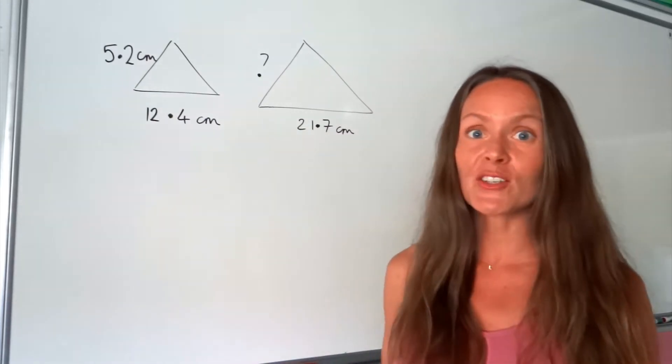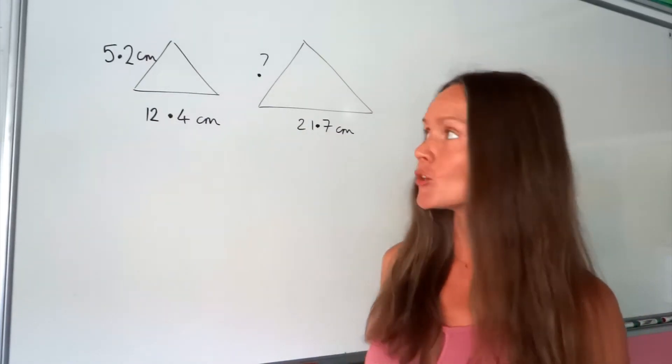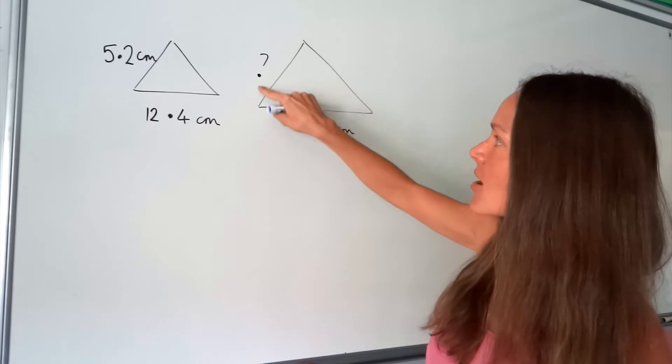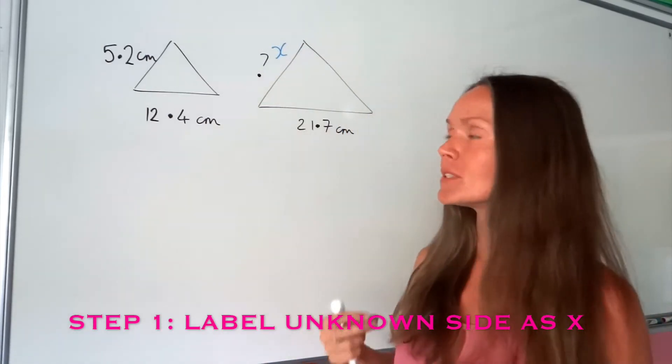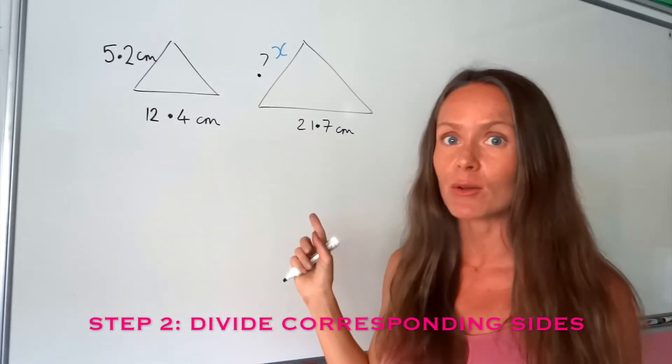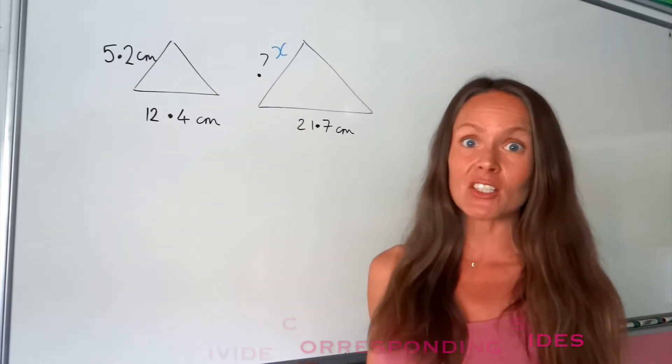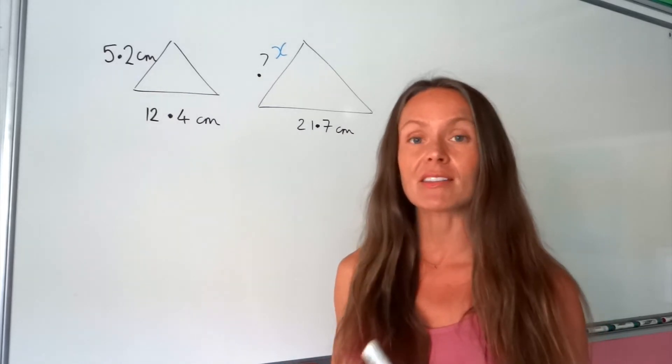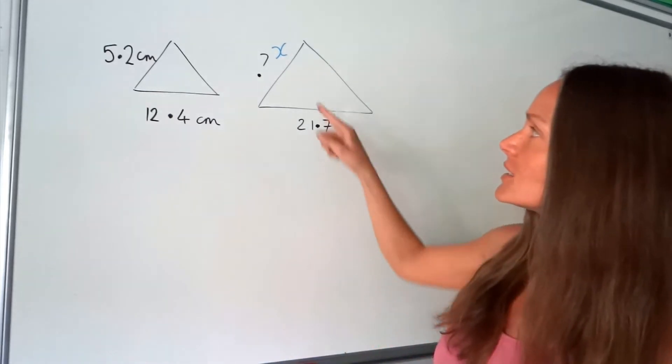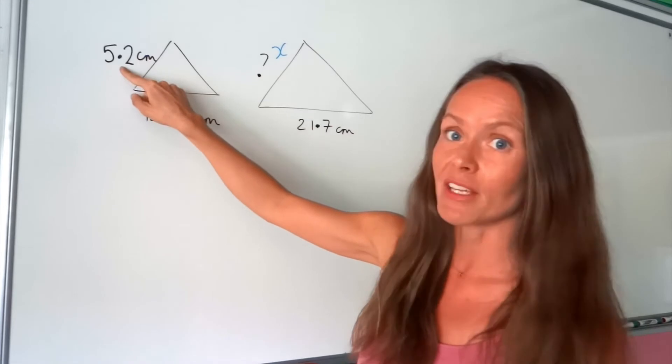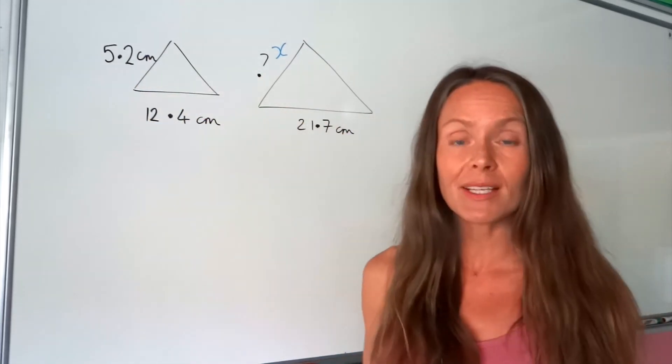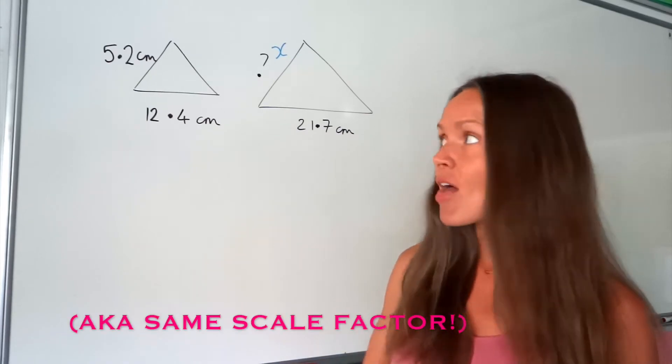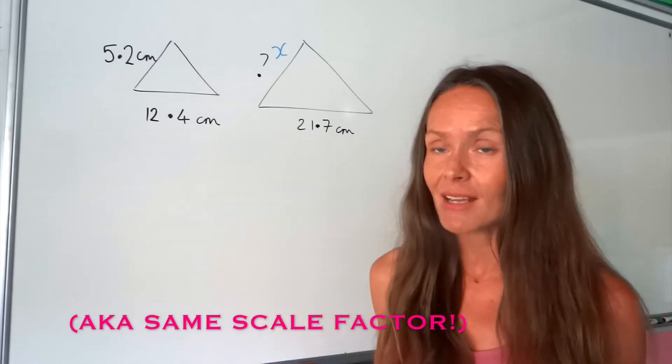In this first question we need to work out the length of pq which is this distance here so I'm just going to call that x. And to work out x we need to divide the corresponding sides in the two triangles because remember they're similar shapes and that means their sides are proportional. So when I divide two sides with each other and then I divide a different pair of two sides, I should always get the same number when I divide them. That's just a fact about similar shapes.